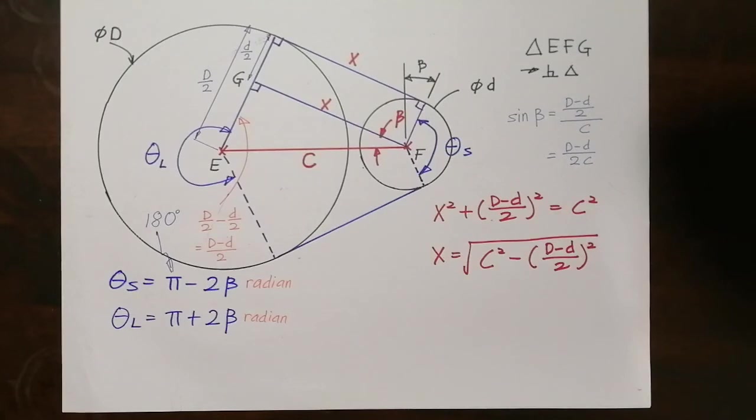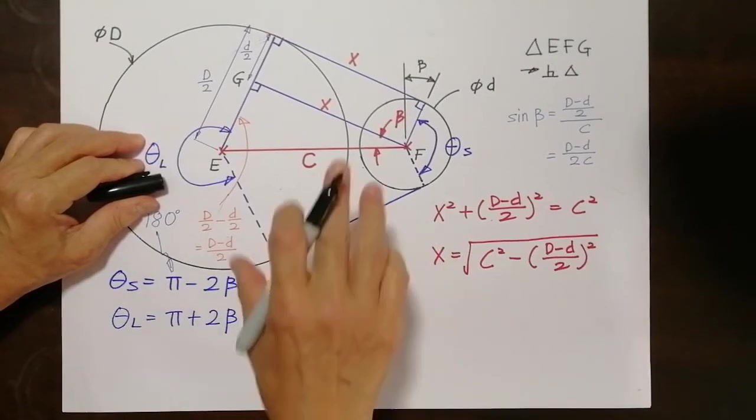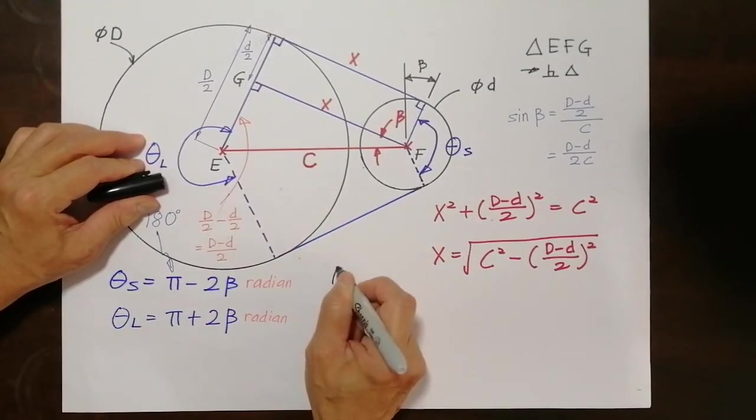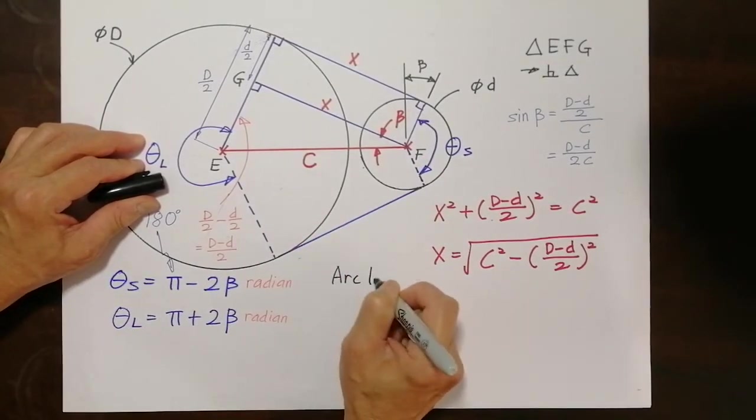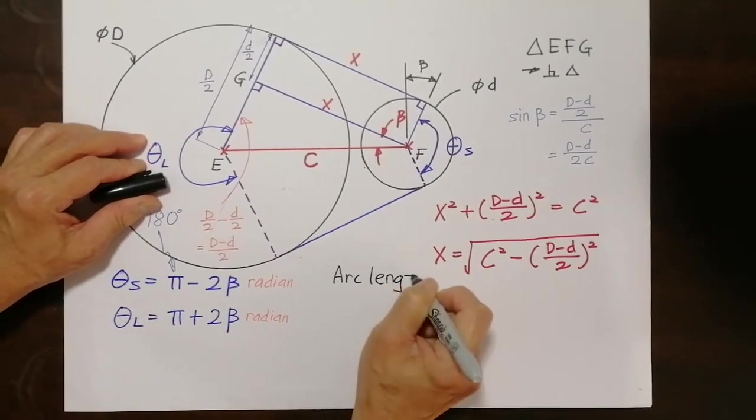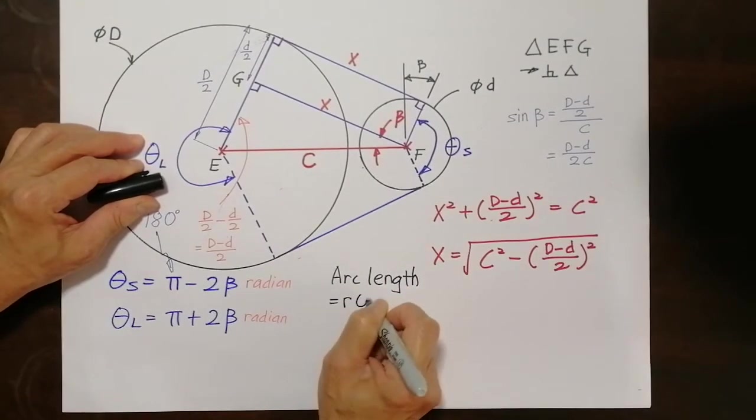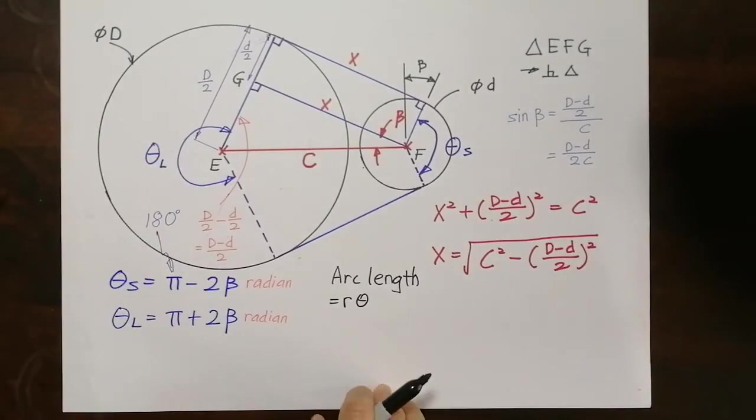Now if you go back to your school days, you realize that arc length, arc length of a small arc, arc length is the relation of arc length equals R times theta. So that is very neat.